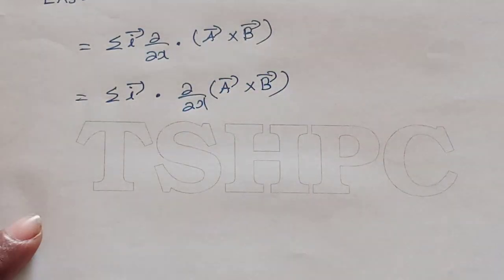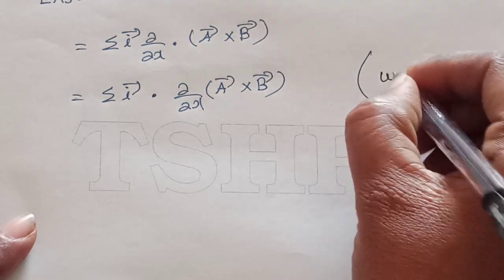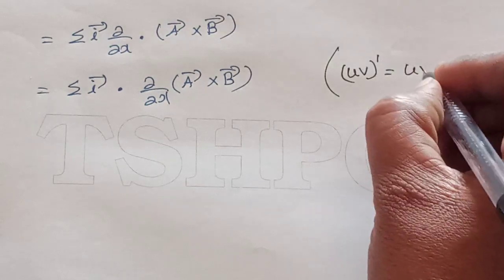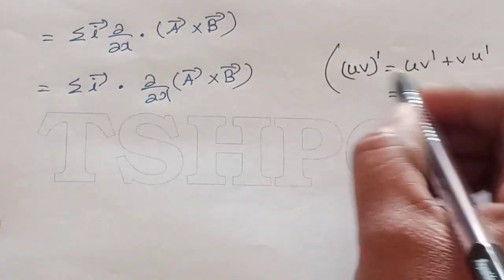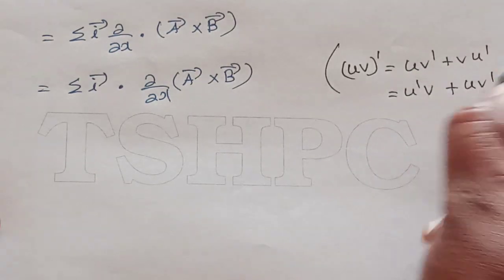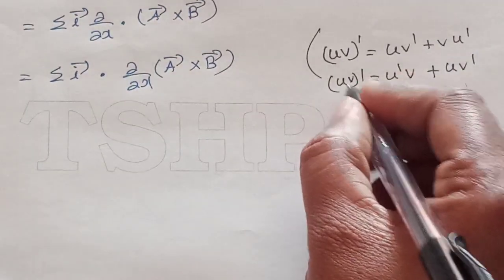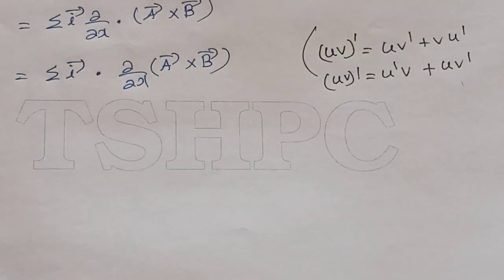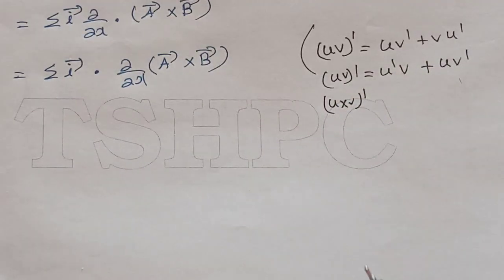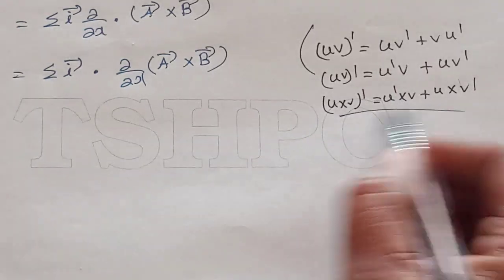Since ∂/∂x is a differential operator acting on a product of two functions — here a cross product — we apply the uv product rule. (u×v)' = u'×v + u×v'. So differentiating the cross product: ∂/∂x of (a×b) = (∂a/∂x)×b + a×(∂b/∂x).